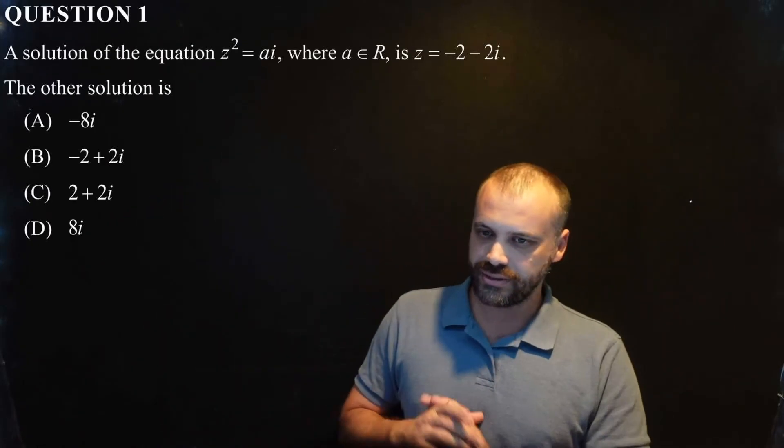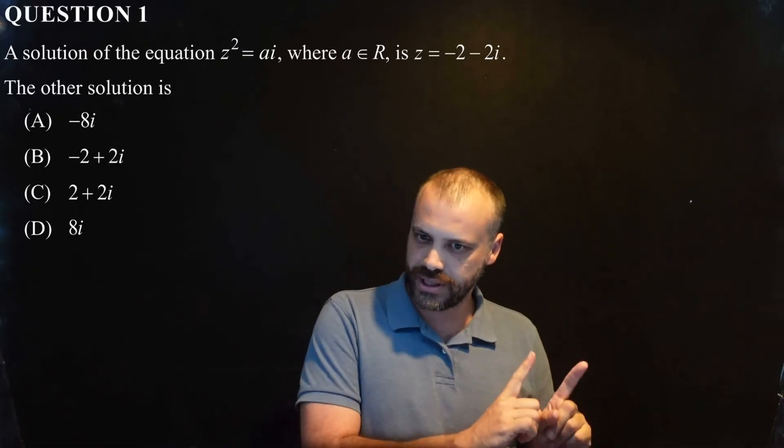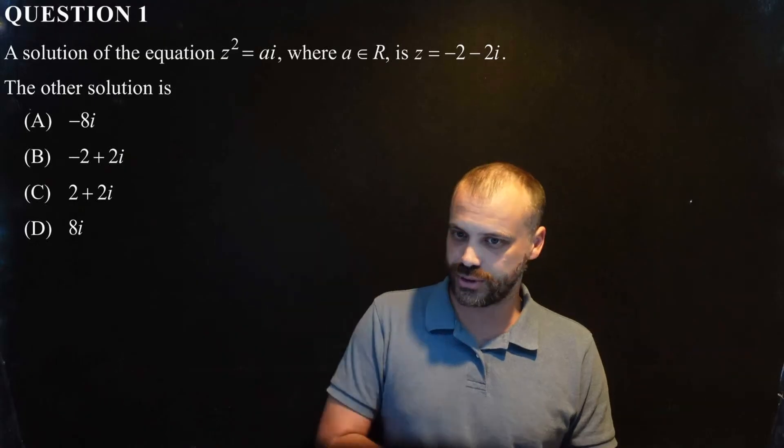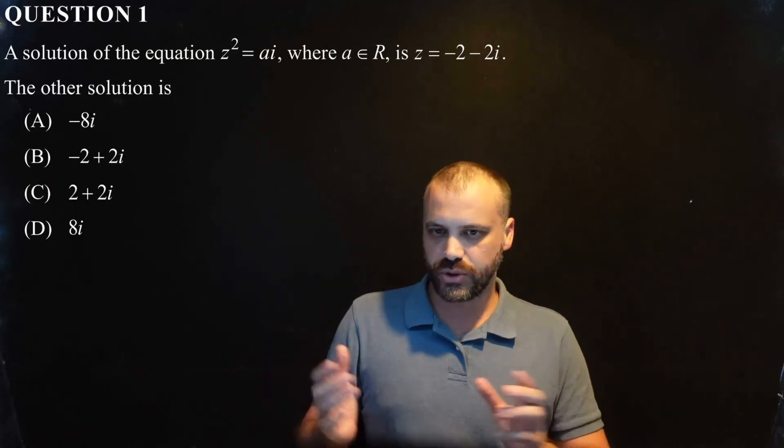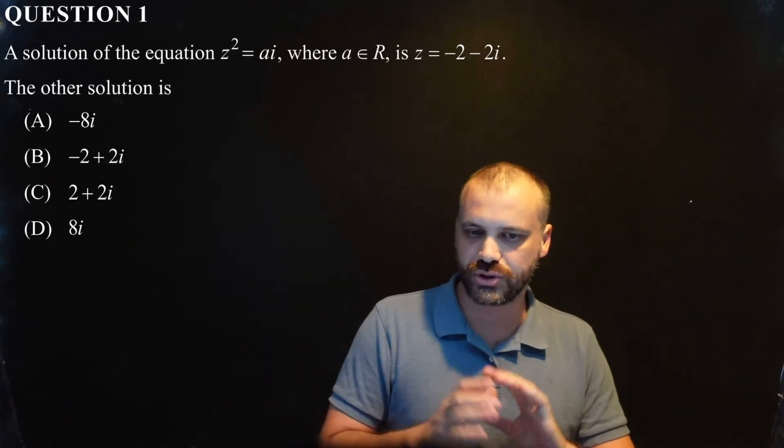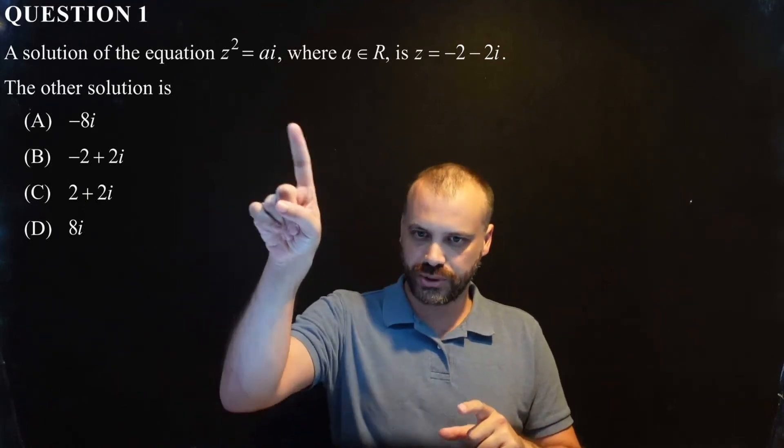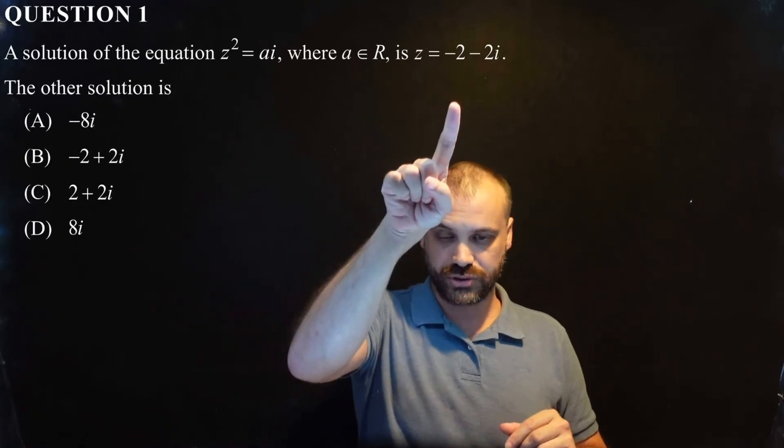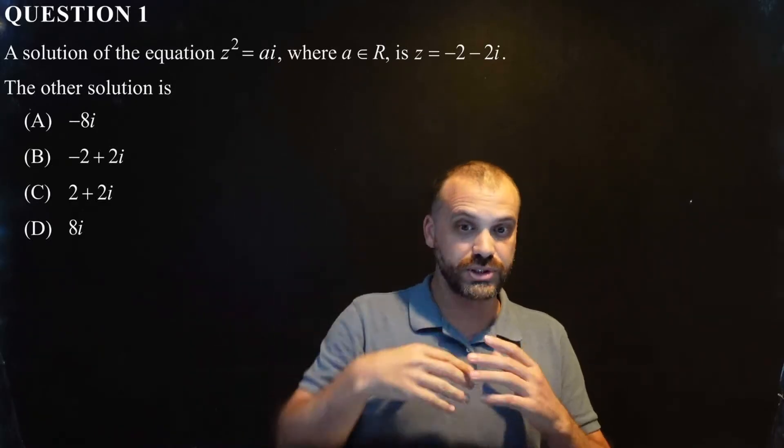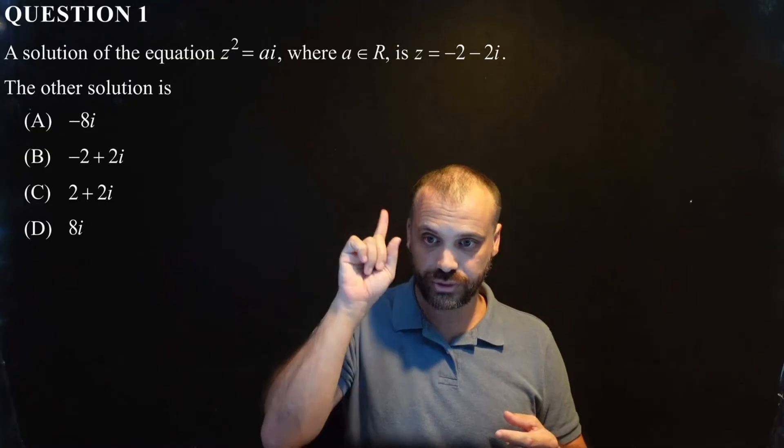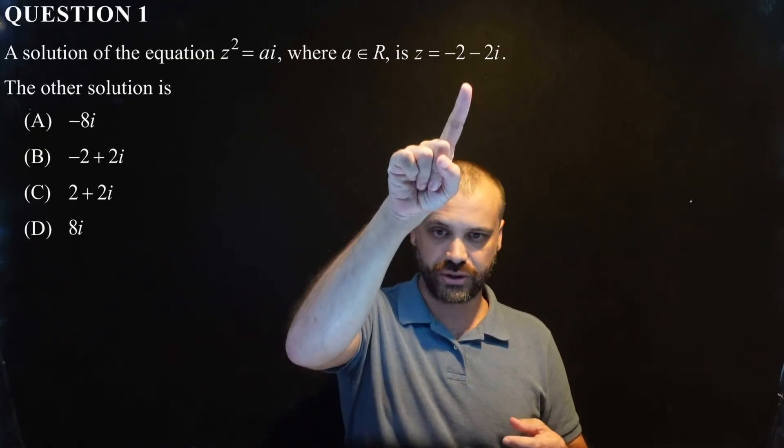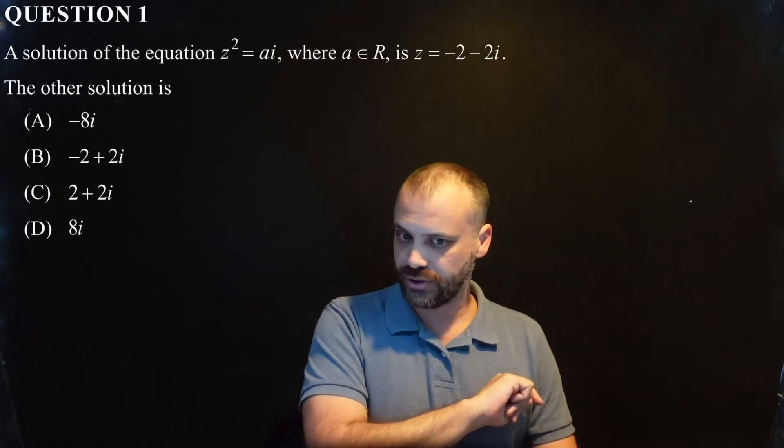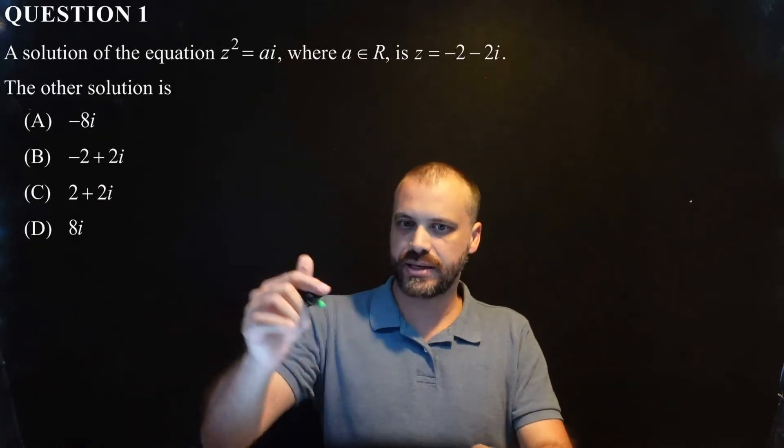So, this question here, and this question in the paper that it appeared in was the worst multiple choice question that students did, and it was question 1. Why was it the worst one? It was because students got a little too overconfident, I think. They saw that we're dealing with solutions, complex numbers, that kind of thing. They saw a solution, and they were told, what's the other solution? And they immediately thought, conjugate root theorem, and they found the conjugate of that, which is B, and they all circled B. B is incorrect.